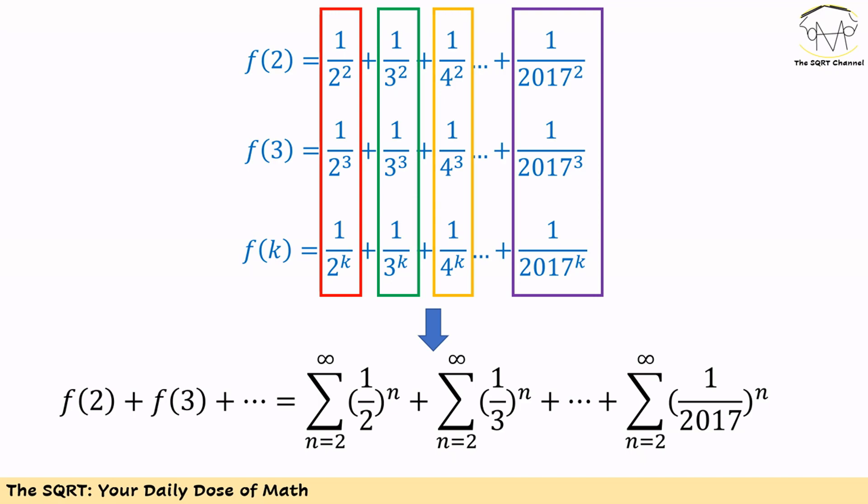If you do so then we can write f of 2 plus f of 3 and so on so forth as sigma 1 over 2 to the power of n for n greater than 1 plus sigma 1 over 3 to the power of n for n greater than 1 and so on so forth.